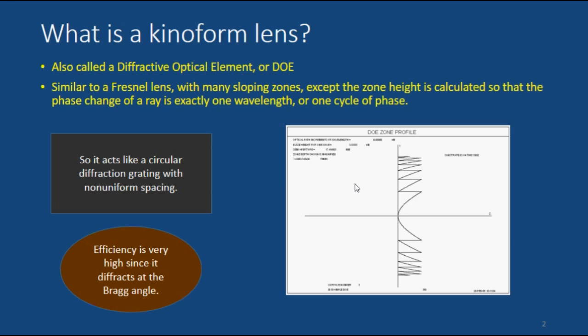Except with the DOE, it's a special case. They calculate the height of each zone such that the phase shift going from one zone to the next is exactly one wavelength of light.